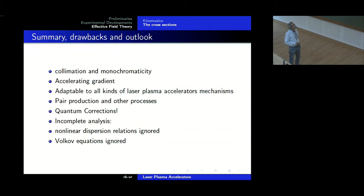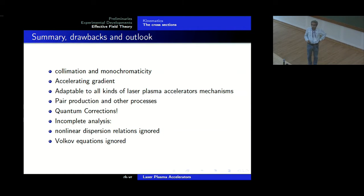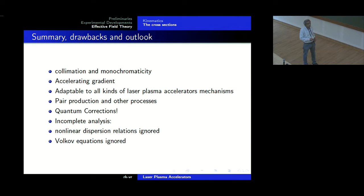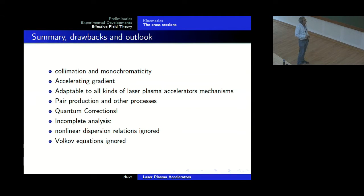Please do not take these numbers very seriously — please only take them as some kind of indicators of the promise that this kind of approach holds. In high energy physics, we are used to doing many effective field theories in spite of QCD being a fundamental theory. Probably we should not be reliant on lattice gauge theory alone. Here is the summary, drawback and outlook: we have, in principle, collimation and monochromaticity and an accelerating gradient. It is adaptable to all kinds of laser plasma. Pair production is very easily incorporated in my effective field theory approach. Quantum corrections can be computed — we in high energy physics always remember the great quantum correction of Schwinger to synchrotron radiation, which he did in the 1940s. But this analysis is incomplete — it has barely begun.